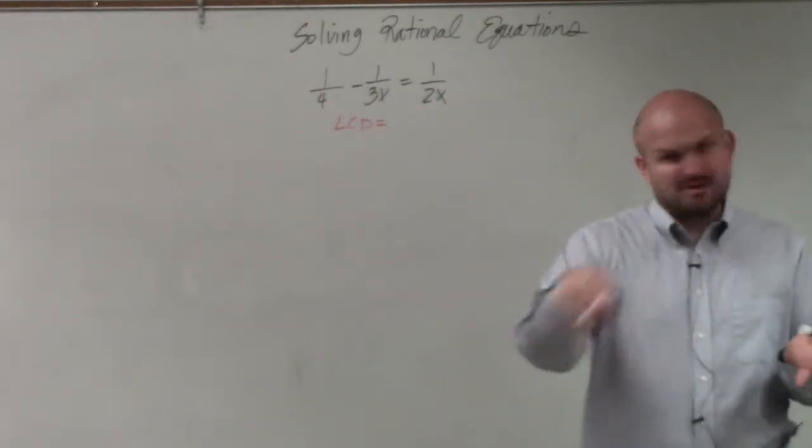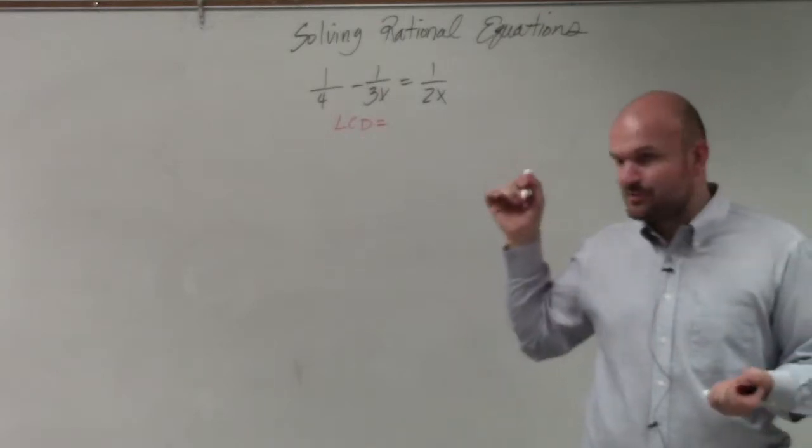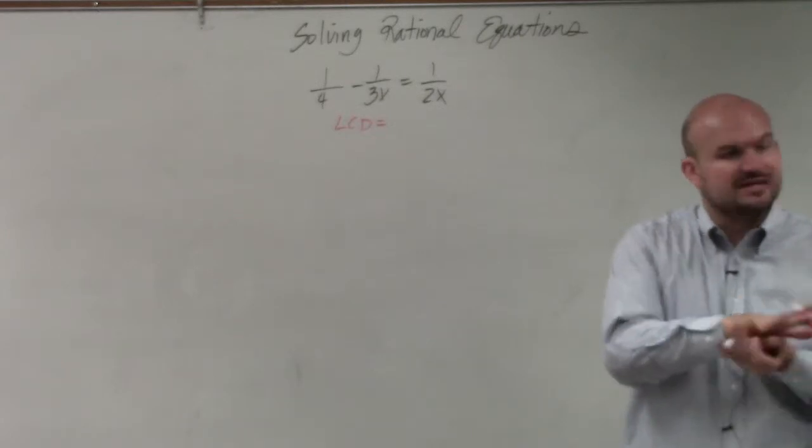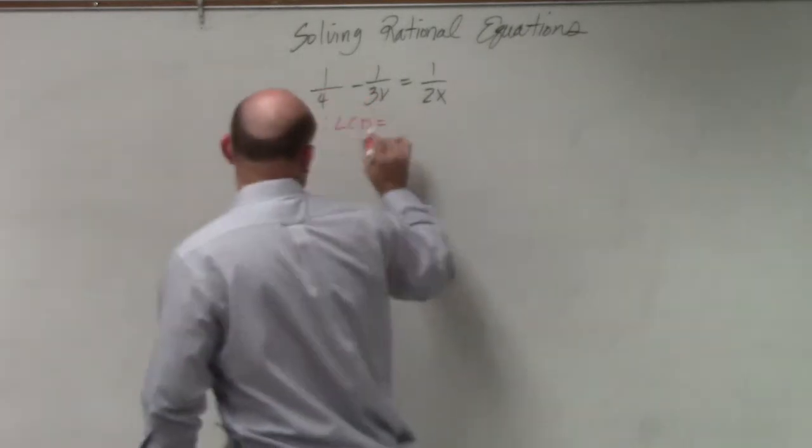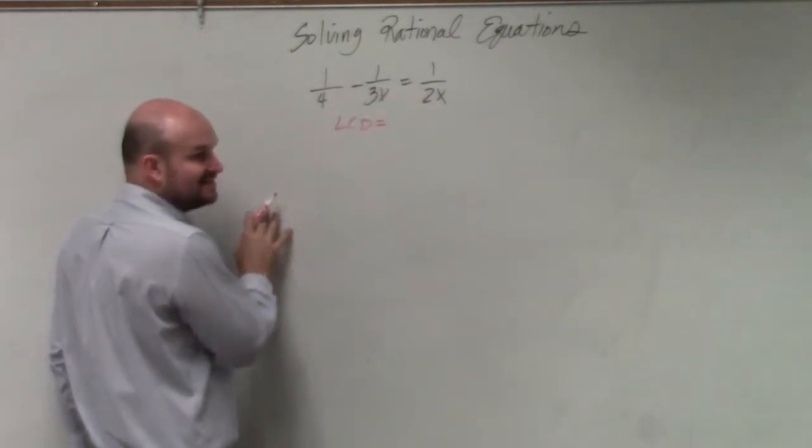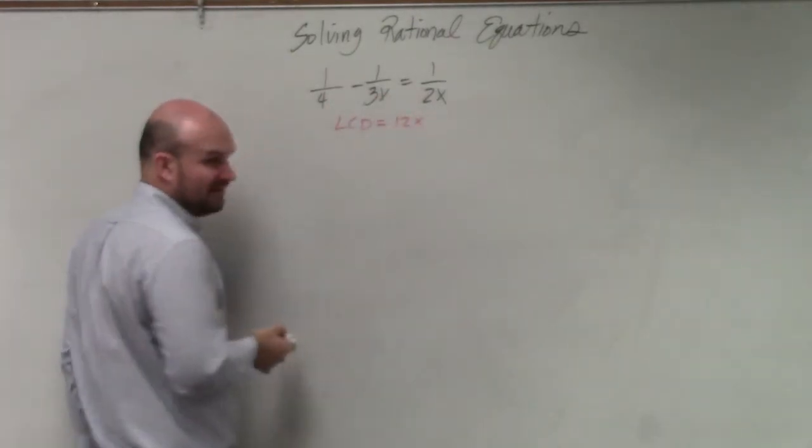So I remember on the focus lessons, I showed it this way, and I saw a lot of people never even did this. So let's make sure we do this first. Find your LCD first. The LCD is going to be the value that 4, 3x, and 2x are all going to divide into, which in this case is going to be 12x.